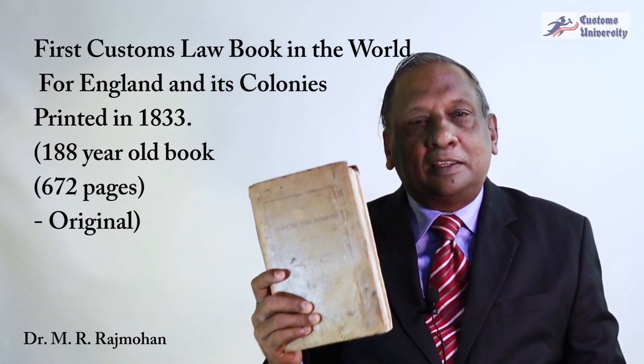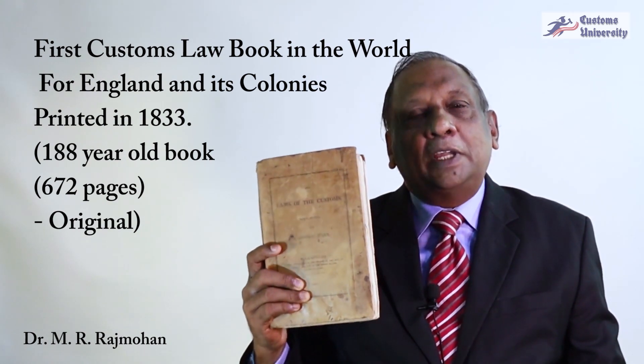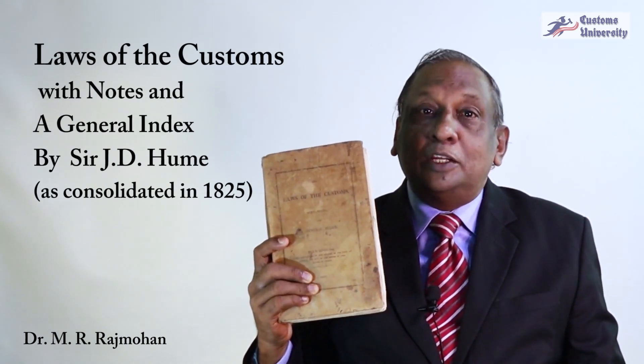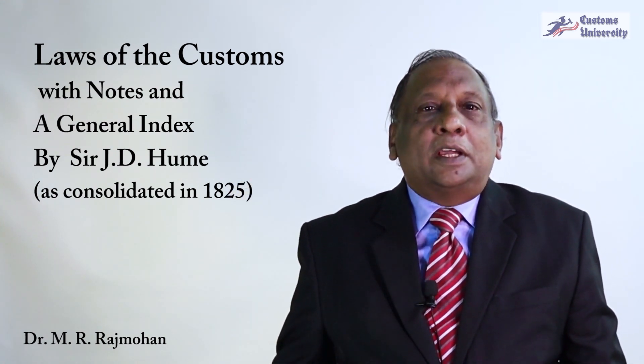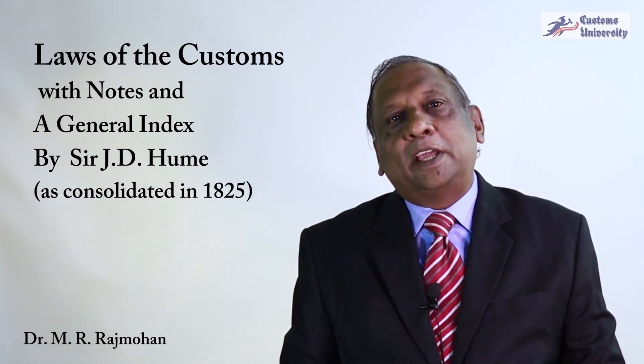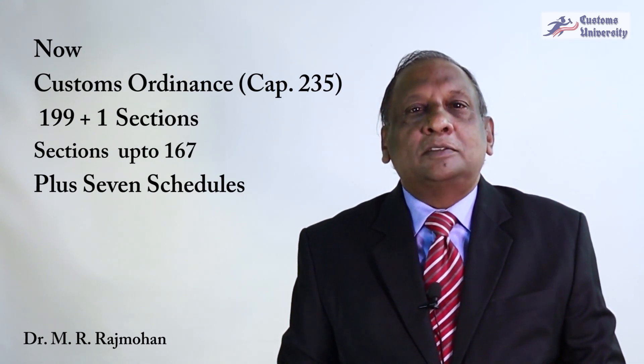This book was printed in 1833 for the customs of England and its colonies, as it was in 1825. Thereafter in Ceylon there were several other ordinances — 1836, 1837, 1856, and so on — and finally a consolidated customs ordinance was compiled in 1869 and came into operation from 1870. That has gone through around 150 years, 51 amendments, and appears as Customs Ordinance Chapter 235.